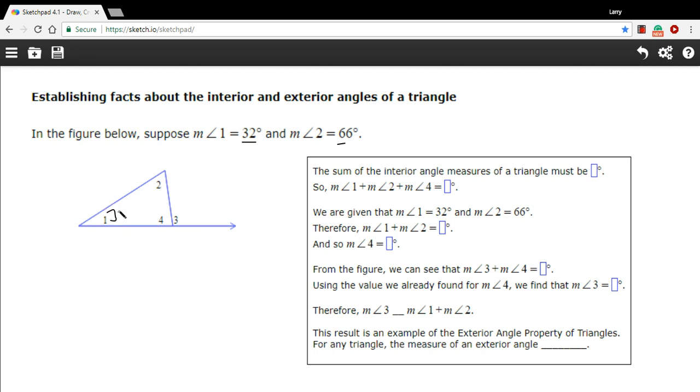So angle 1 is 32 degrees, angle 2 is 66. So we've got two of the angles. We can get the third one. Let's see, 32 plus 66 is 98. Subtract that from 180 to get this angle 4 here, and you're going to get 82.